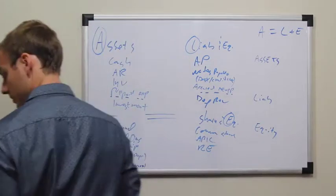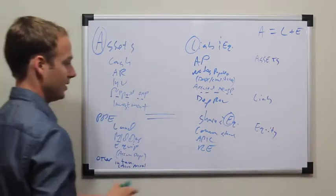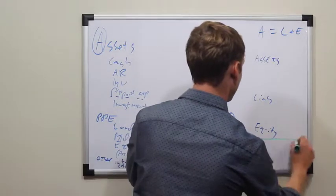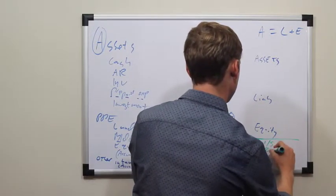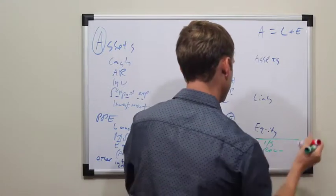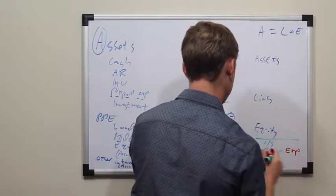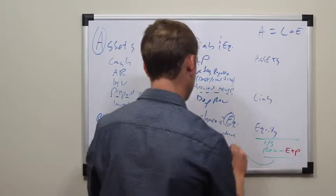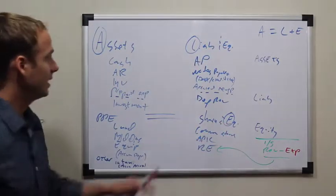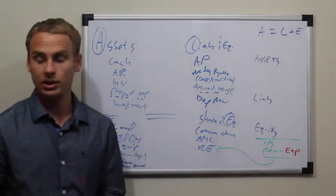Now retained earnings is going to come from our income statement, which is going to have our revenue minus expense. And this is going to connect the income statement to the balance sheet.